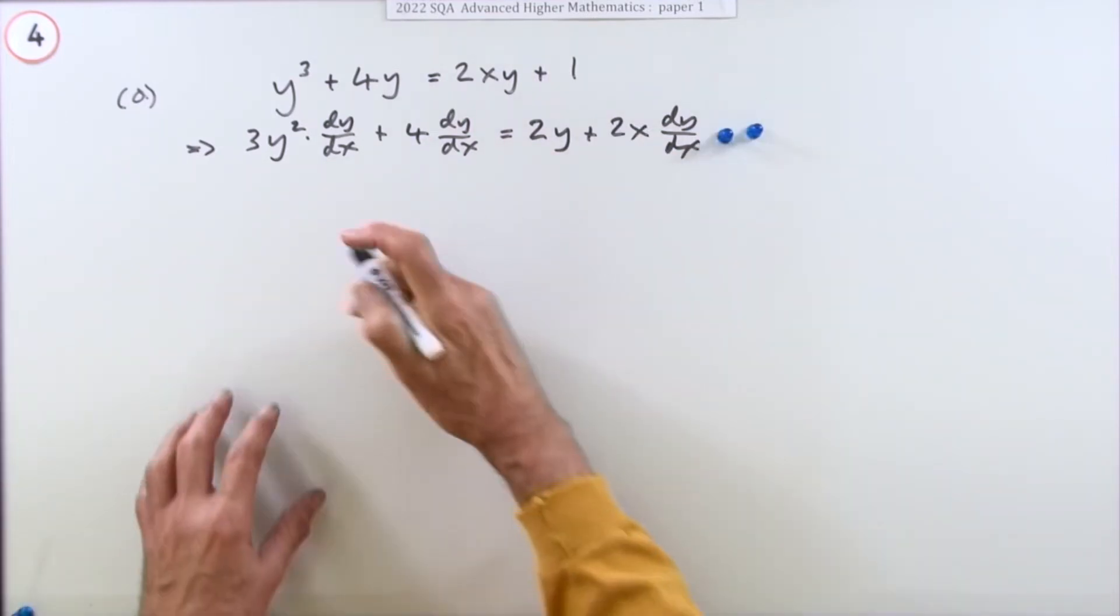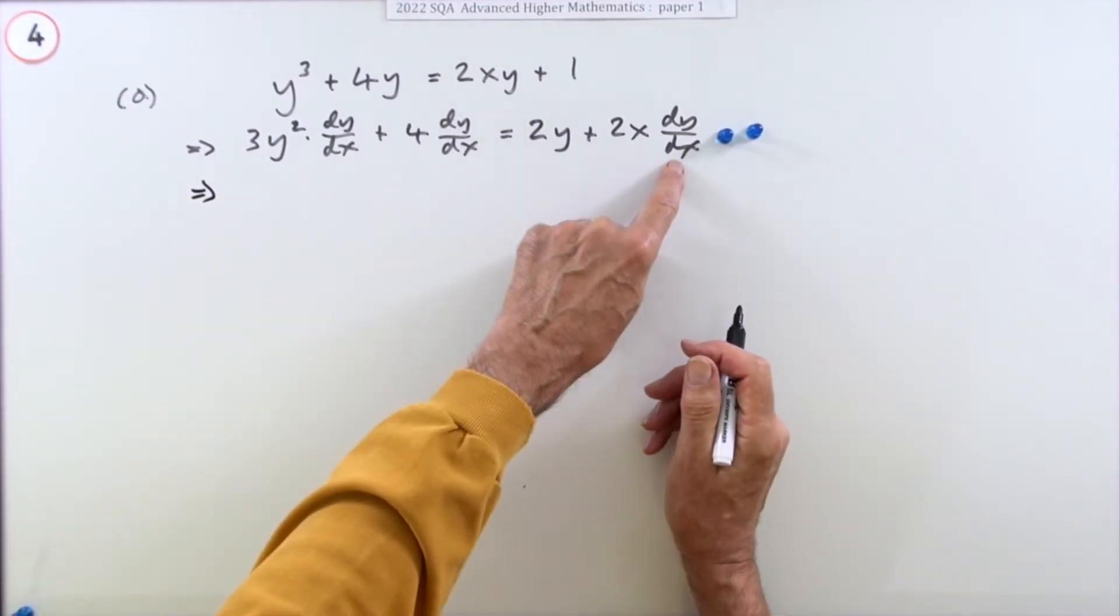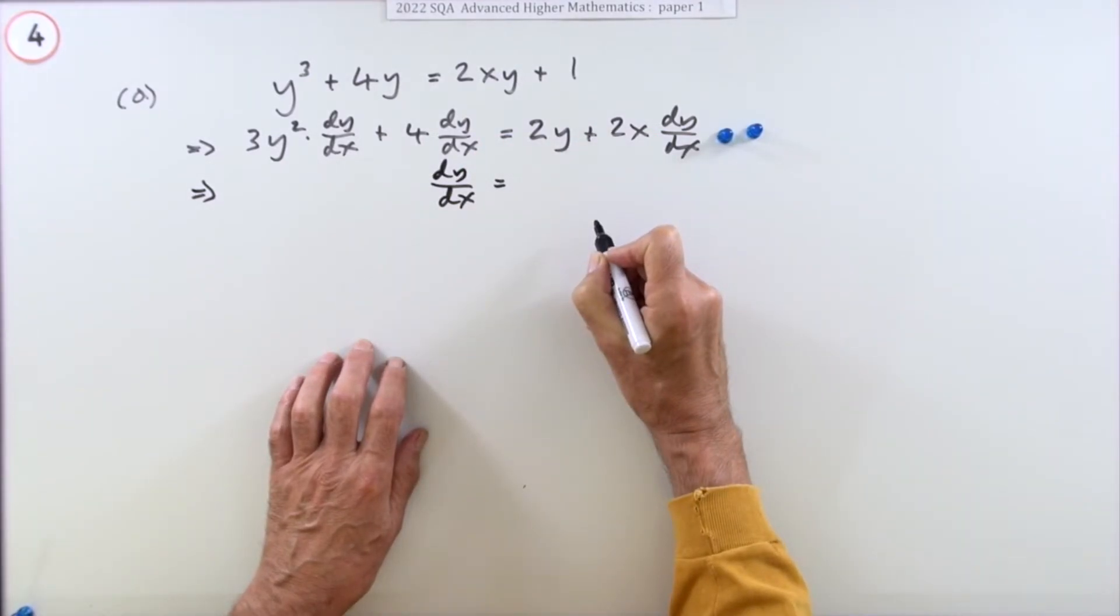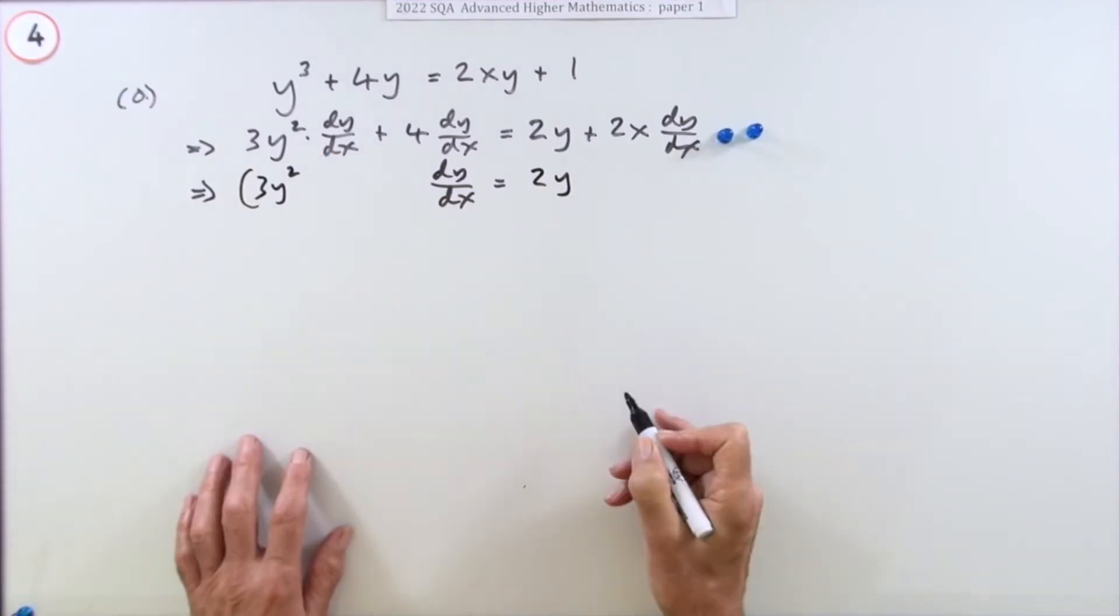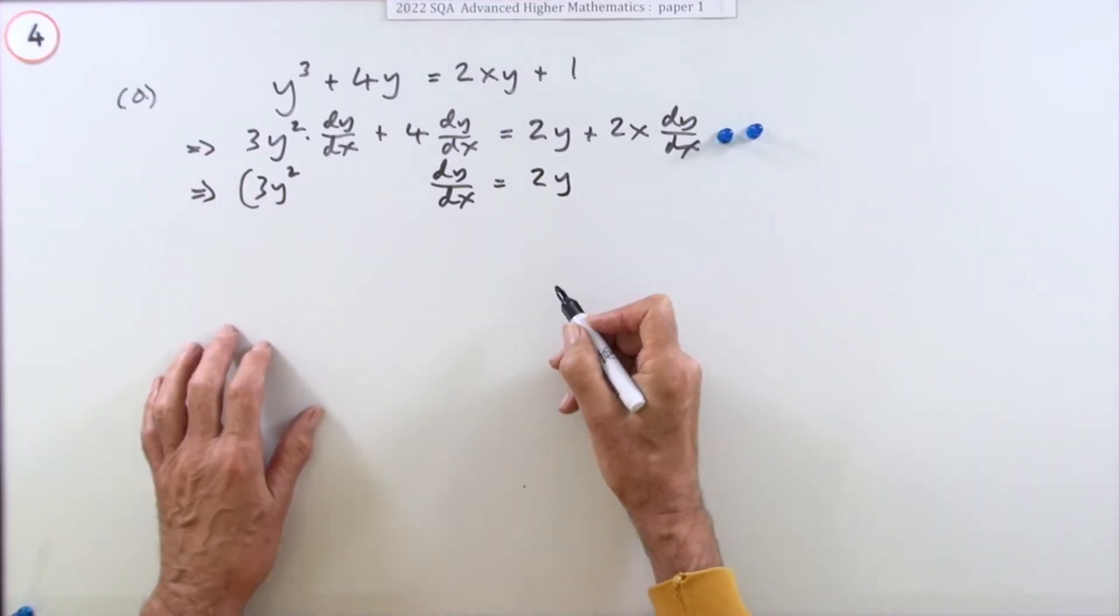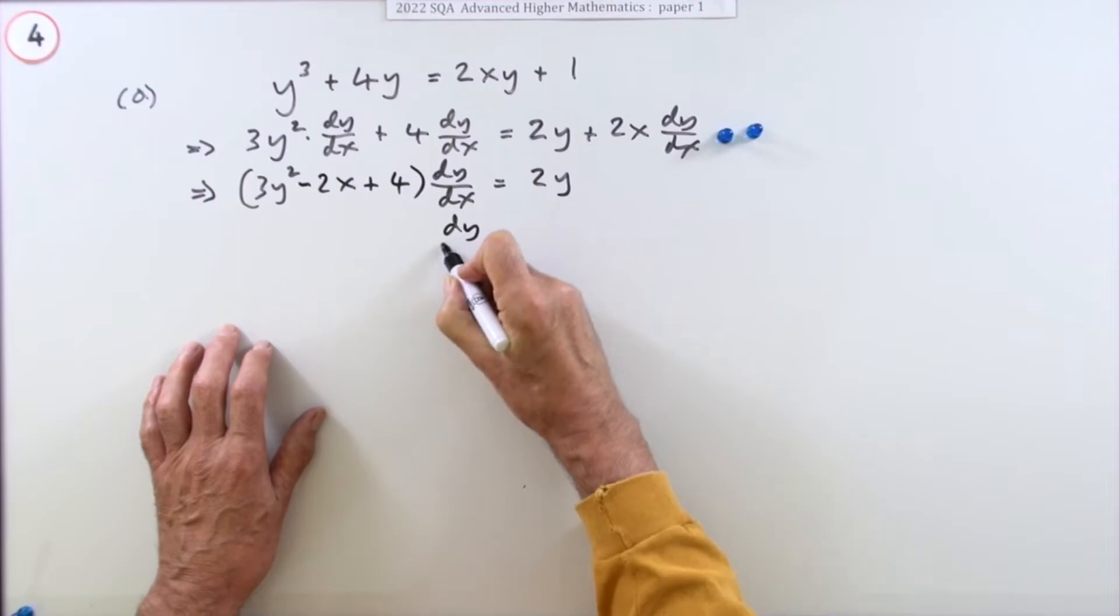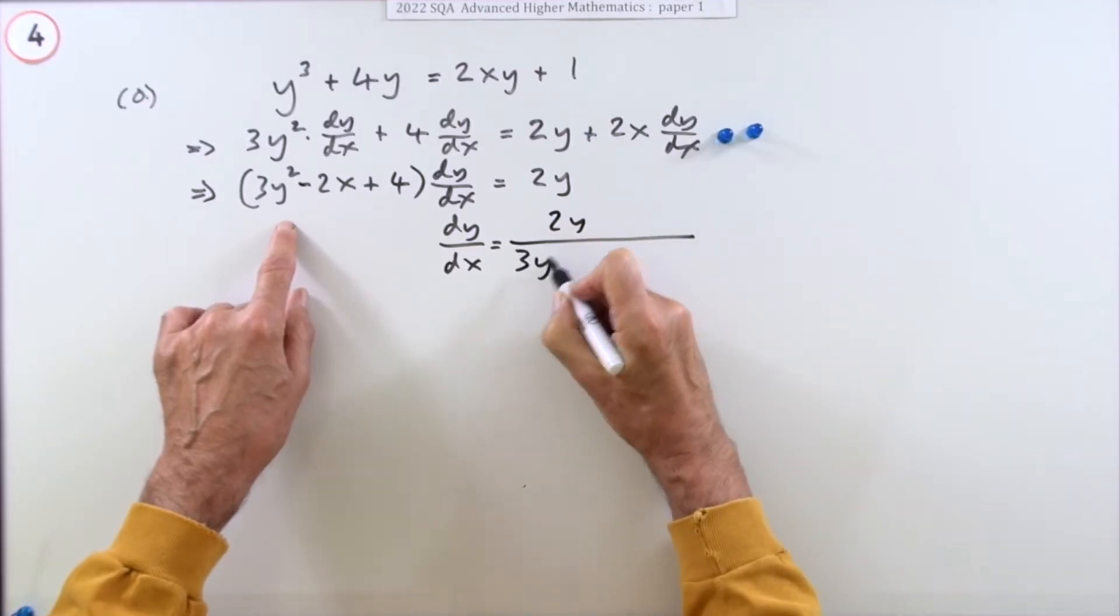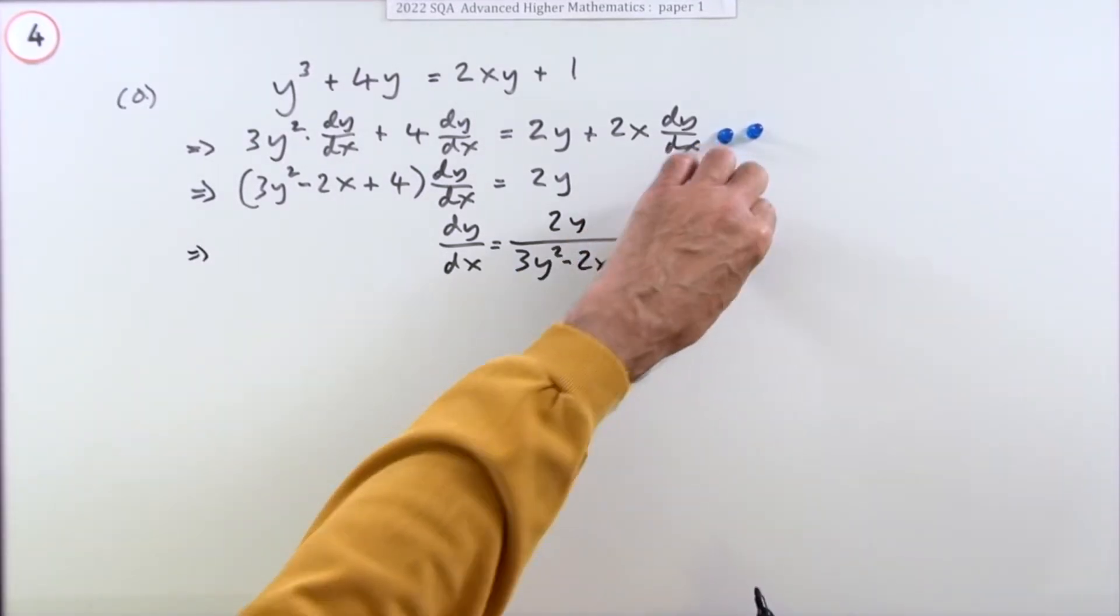Now I need to gather that up because I have to find dy/dx. I've got these three terms with dy/dx, so I'll take them all over here. I've only got 2y over here. Over here altogether I've got 3y², and I could put the letters first: 3y² - 2x + 4. And then finally I'll have 2y and divide by all of that. That's it, three marks.